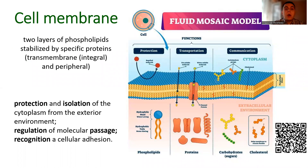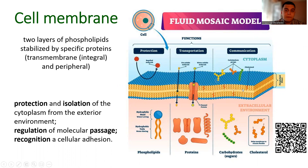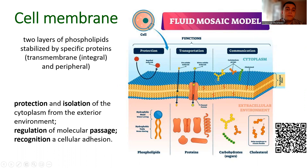I would like to speak about the cell membrane. Cell membrane consists of two layers of phospholipids which are stabilized by specific proteins. We have different types of proteins — for example, transmembrane or integral proteins, which pass through the entire membrane, and peripheral proteins, which are located on one side of the cell membrane. We also have cholesterol molecules in our cell membrane to stabilize it. The functions of the cell membrane are protection and isolation of the cytoplasm from the exterior environment, regulation of molecular passage, and recording cellular digestion. You may see a QR code for interactive pictures in the bottom corner of the slide.